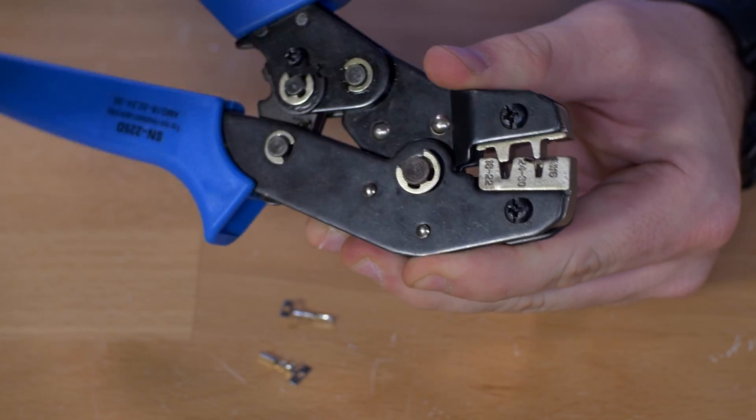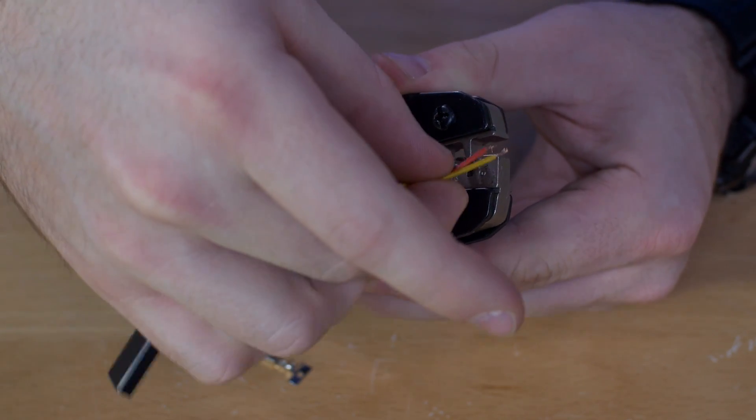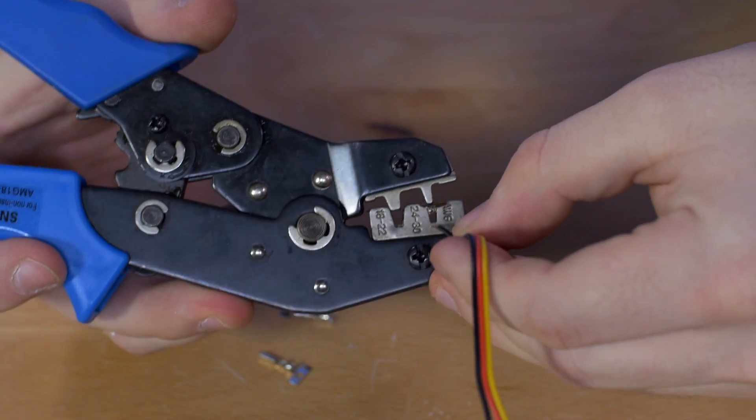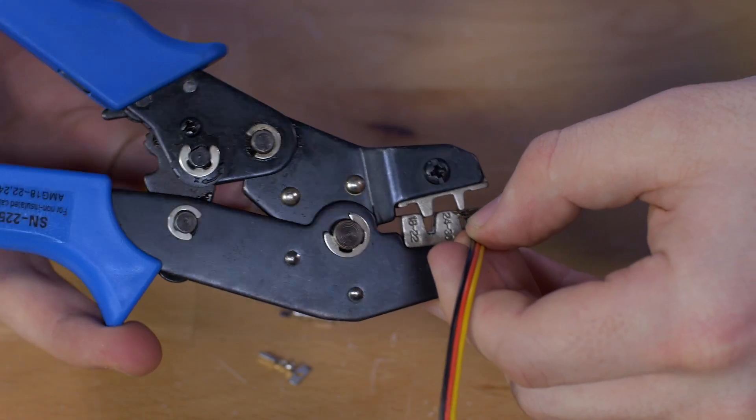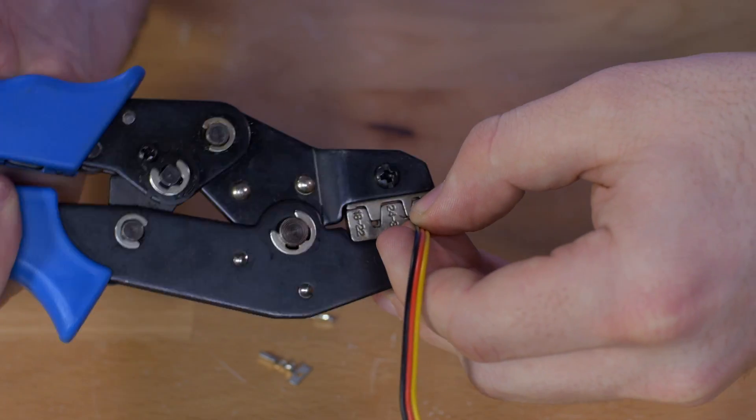Once you have that done, go ahead and slide your wire inside about halfway. Come over here so you can see what I'm doing. And once that's in, clamp it down the rest of the way and then that just wiggles out right there.